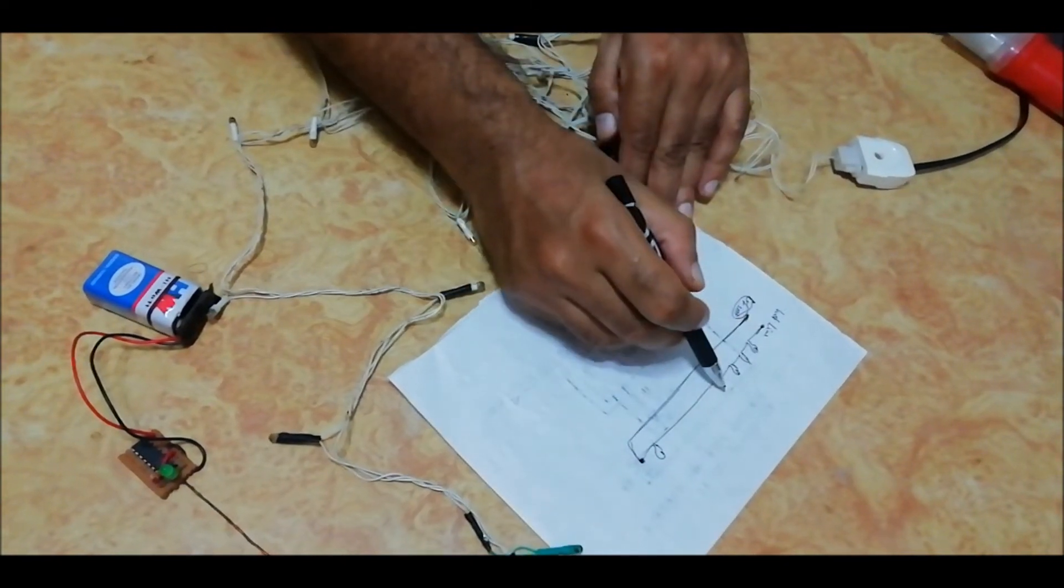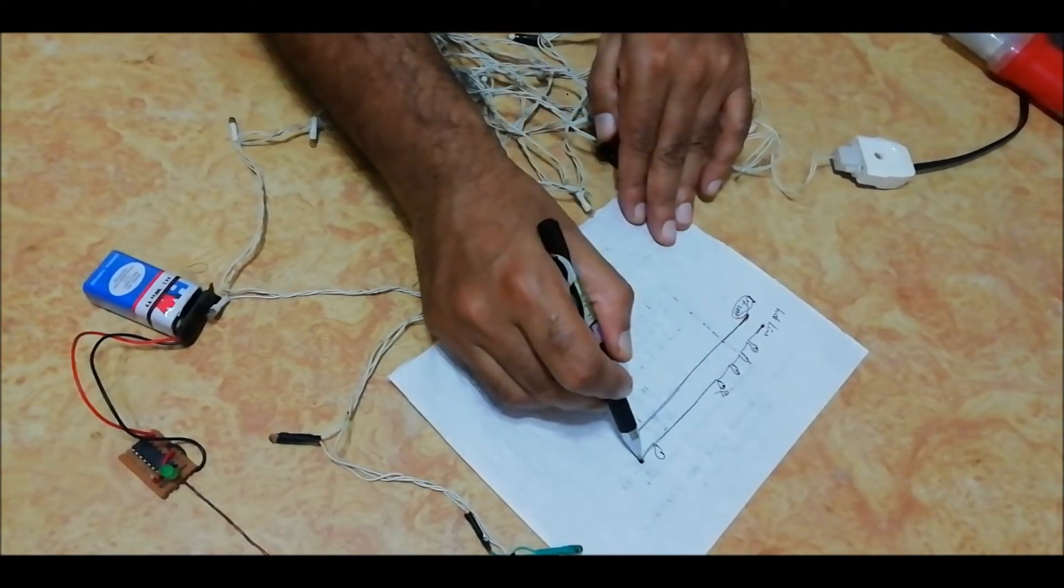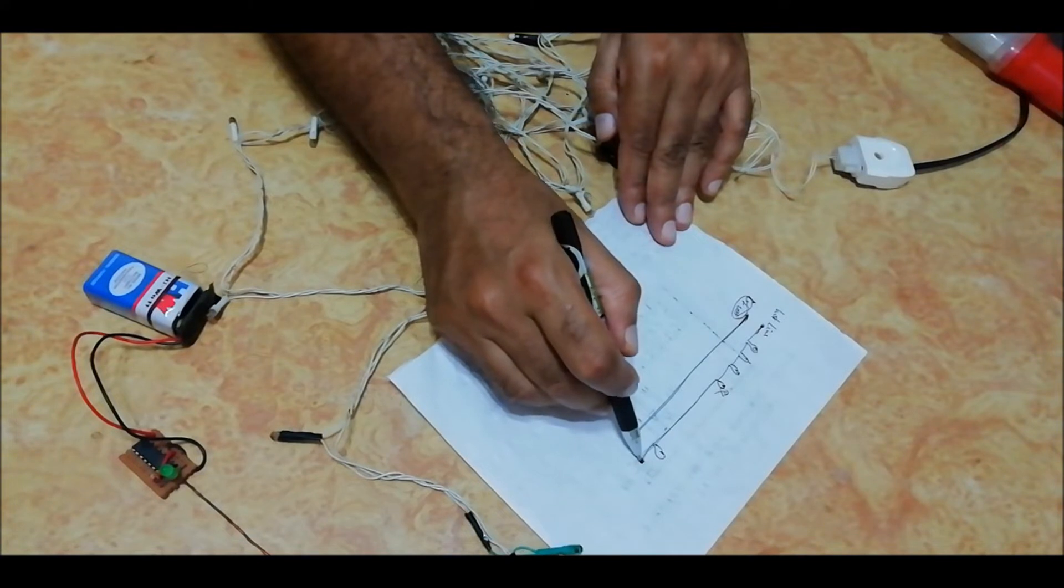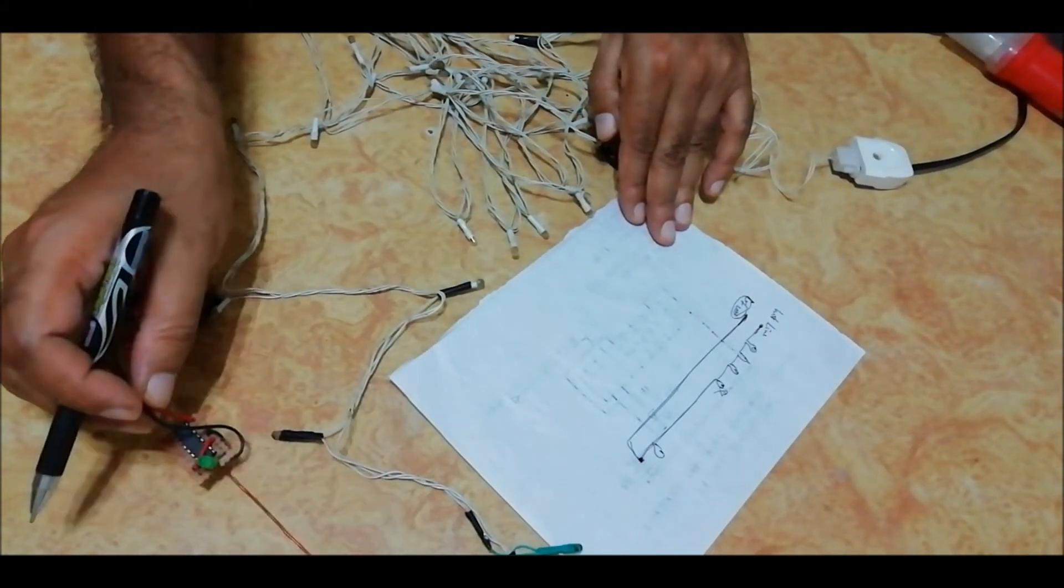So some of the bulbs in this series are defective, so the voltage does not pass through to the end point. At the end point, we are not getting any blinking from this non-contact tester.